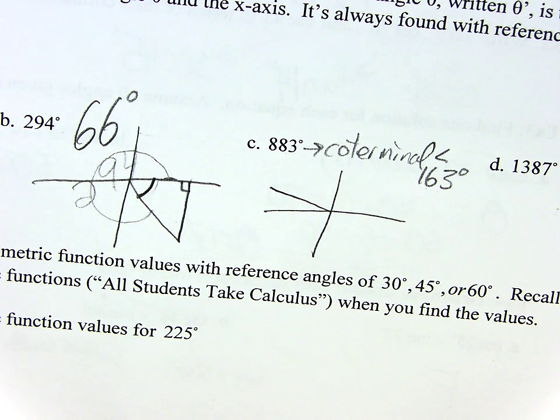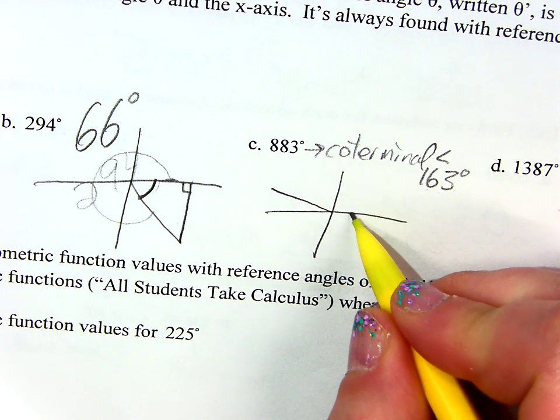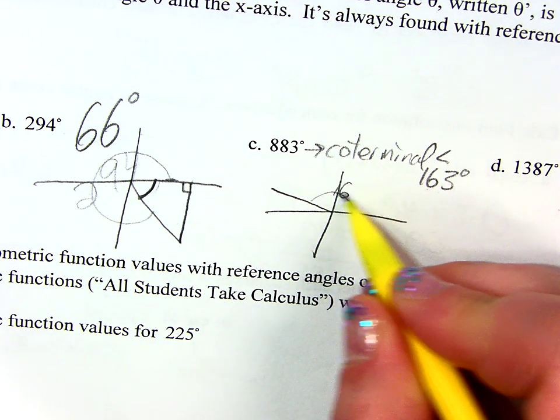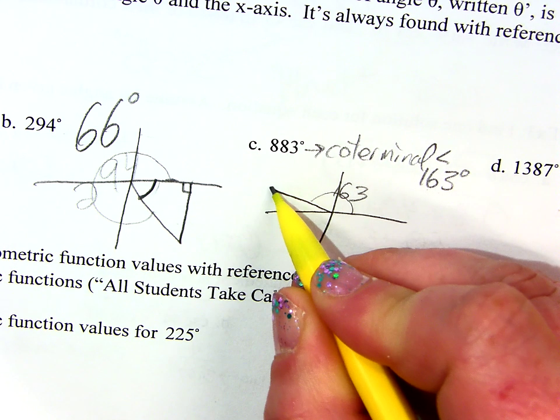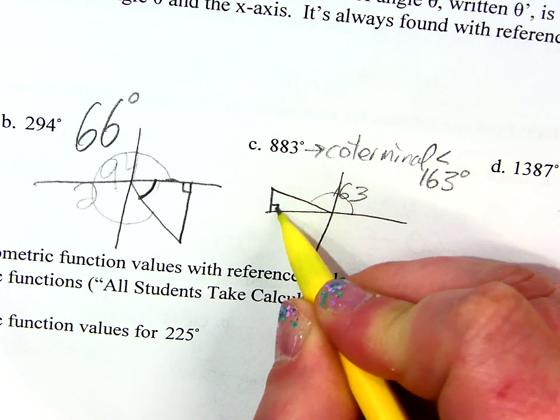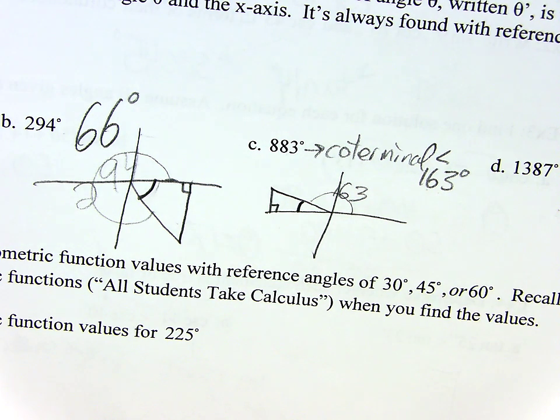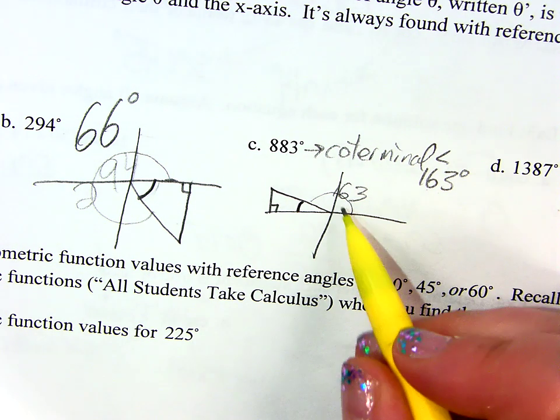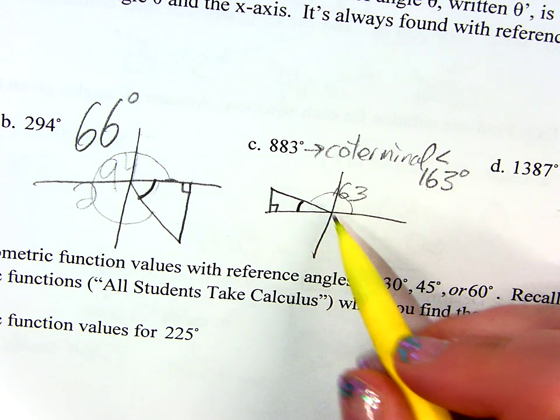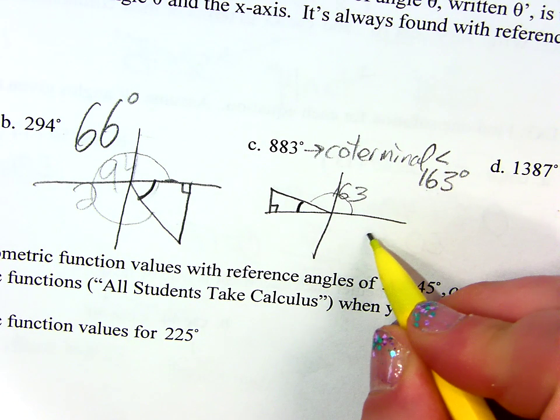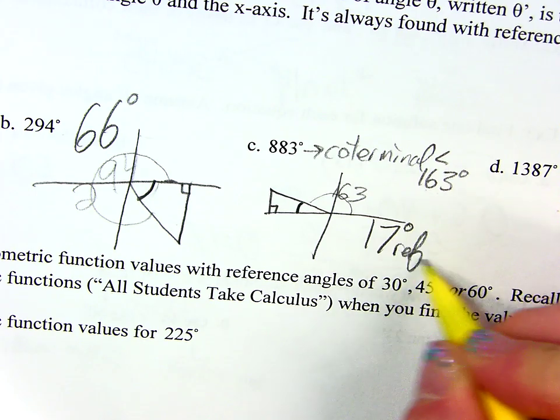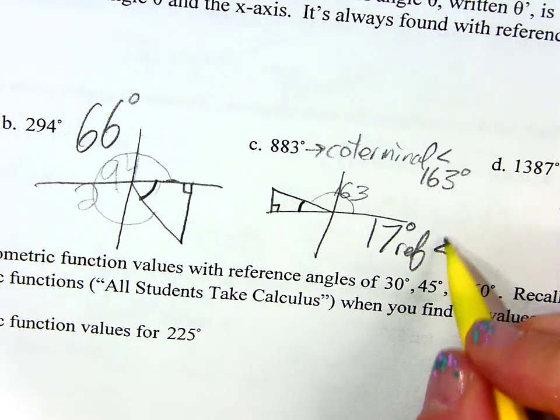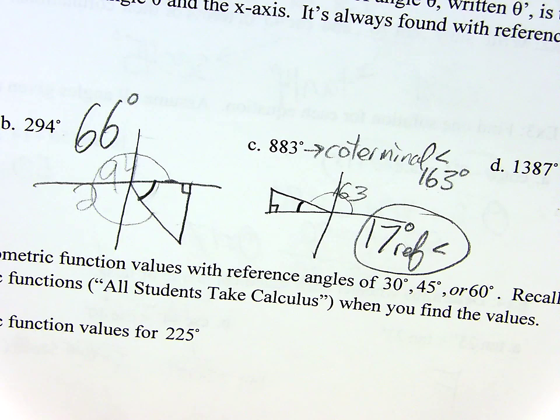Okay? So that's not the reference angle. I still have to find it. But I know that this is 163. And I'm looking for, remember, you would drop the perpendicular to the x-axis. And I'm always looking for that angle. So what would that angle be in this case? 17. Exactly. So in this case, I'm doing 180 minus the 163 because I'm just short that little bit. So 17 degrees is my reference angle.